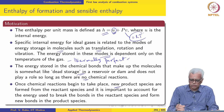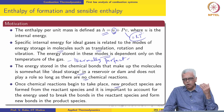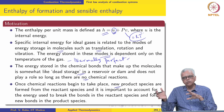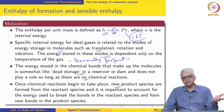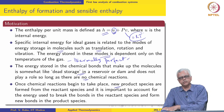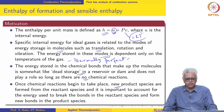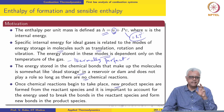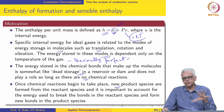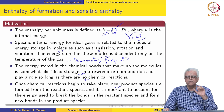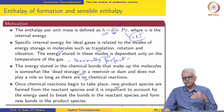Once chemical reactions begin to take place, new product species are formed from reactant species. This means bonds in the reactant species are broken and new bonds are formed to create new product species. Therefore, the energy stored in bonds of the reactant species and the energy that goes into the bonds of the product species all have to be accounted for. This means the specific enthalpy expressions we use have to be modified.